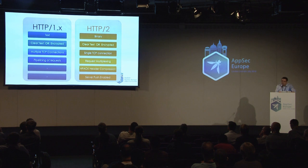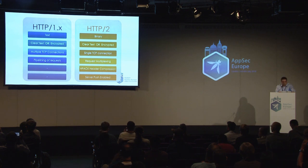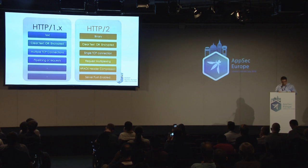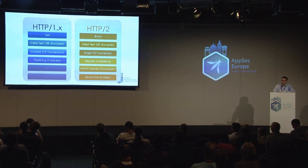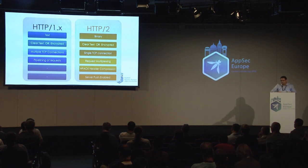To summarize the key differences: HTTP 1.x versions are text-based, while HTTP 2 is a binary protocol. Both can be transmitted over clear text or an encrypted channel. Whereas in 1.x, concurrency was achieved via multiple TCP connections, in HTTP 2 we have a single TCP connection with requests interleaved via frames and streams. Two new mechanisms introduced are header compression and server push.